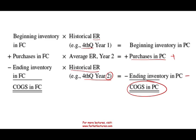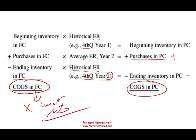Remember, this was the temporal method. Under the current method, you simply take the cost of goods sold figure in foreign currency and multiply it by the current rate — and that's all it takes.